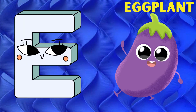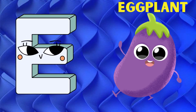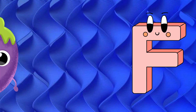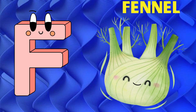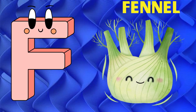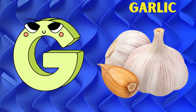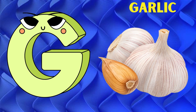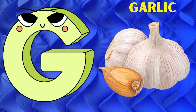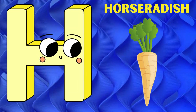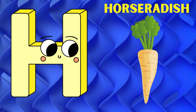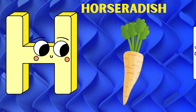E is for eggplant, eggplant. F is for fennel, fennel. G is for garlic, garlic. H is for horseradish, horseradish.